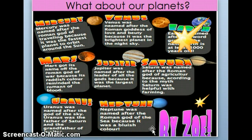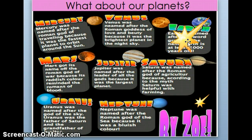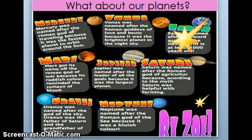Neptune was named after the Roman god of the sea because it was bluish in color. The only planet not named by the Romans was our own Earth, but the name Earth is over a thousand years old as well. So all of it is older than you and even me.